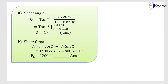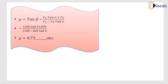Substituting the values, the shear angle phi = 17 degrees. The shear force is Fs = Fc·cos(phi) - Ft·sin(phi); putting in Fc, Ft, and phi = 17 degrees gives Fs = 1200 N. For the coefficient of friction, mu = tan(beta) = (Fc·tan(alpha) + Ft) / (Fc - Ft·tan(alpha)). Substituting the values gives mu = 0.73.